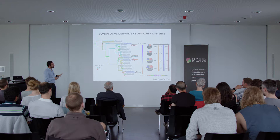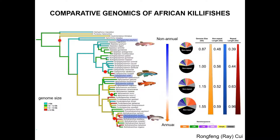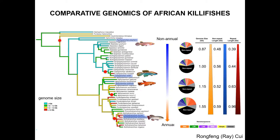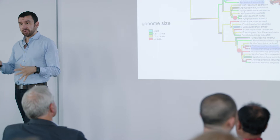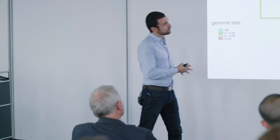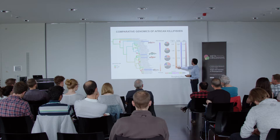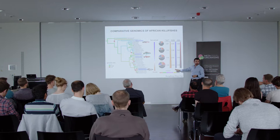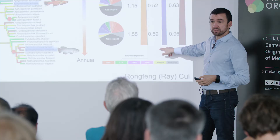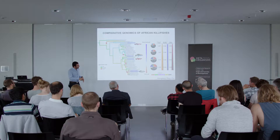What Ray found is that if you are annual — short-lived with diapause — your genome is much larger, going from 0.87 gigabases to 1.55 gigabases. Every time annualism has emerged, the genome has expanded dramatically. The portions of the genome that expanded are the repetitive parts — specifically DNA repetitive elements. If you take the non-repetitive part of the genome, it stays the same across annuals and non-annuals. It's the repetitive part that really expands when you become annual. There is a correlation between genome size and annualism in African killifishes.